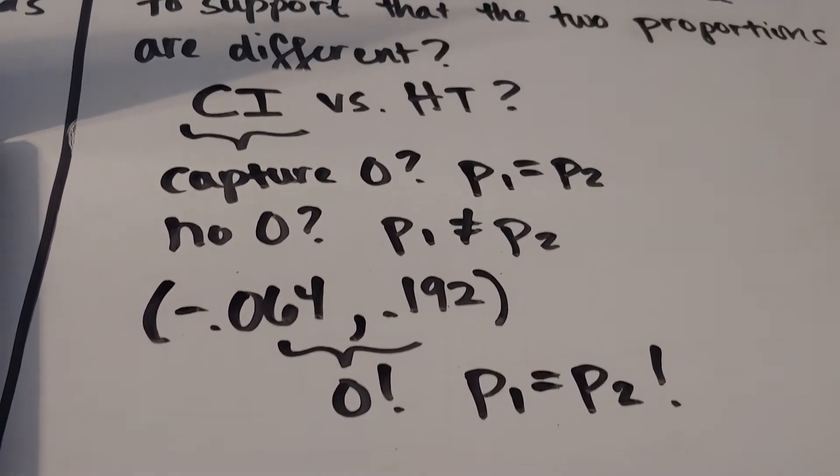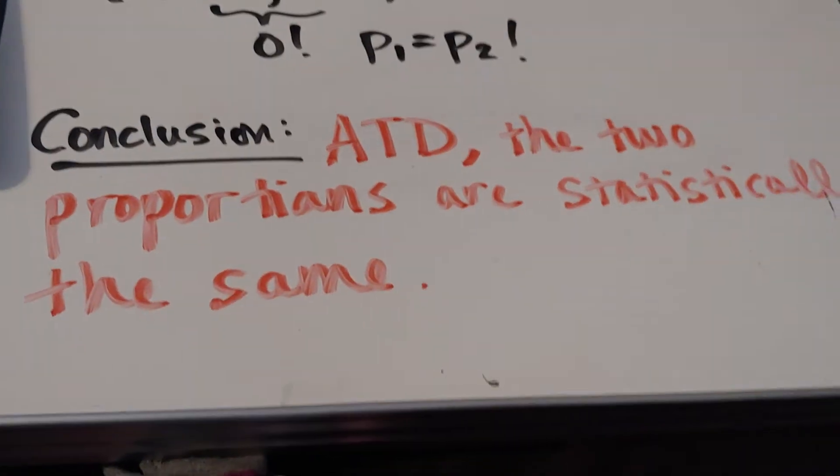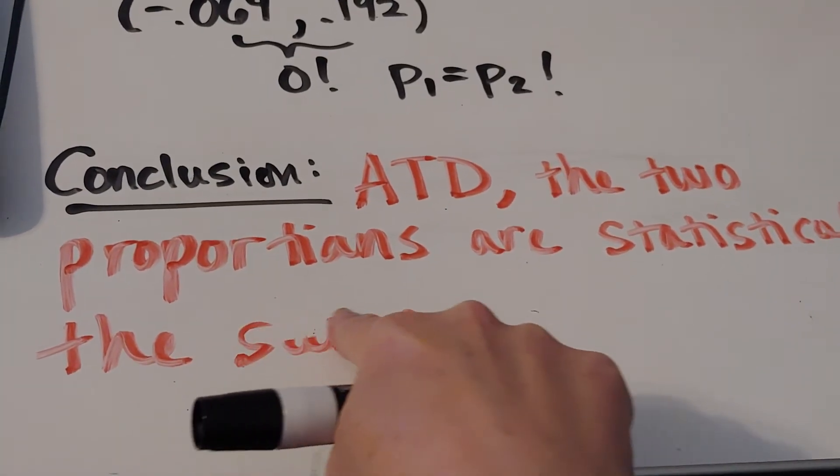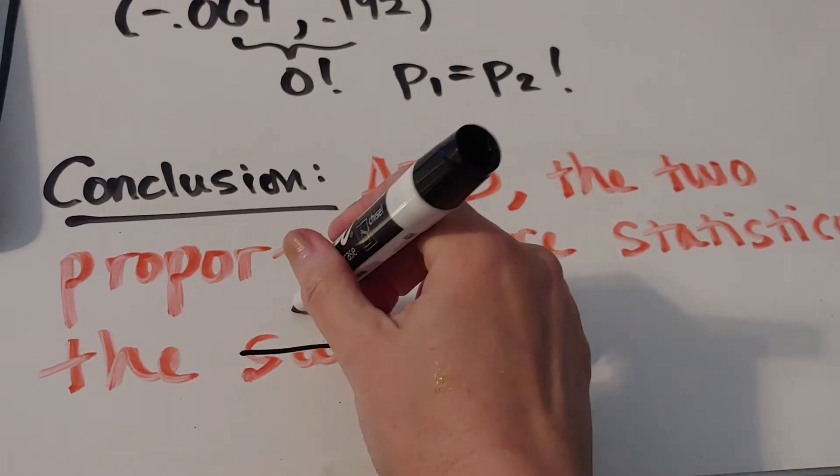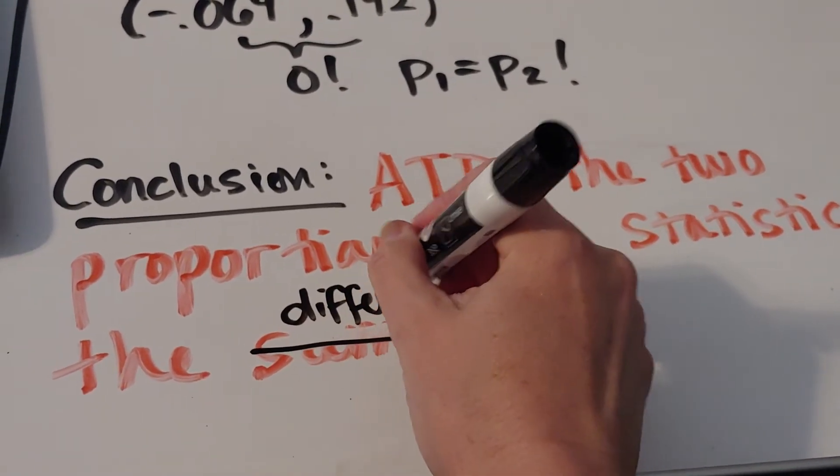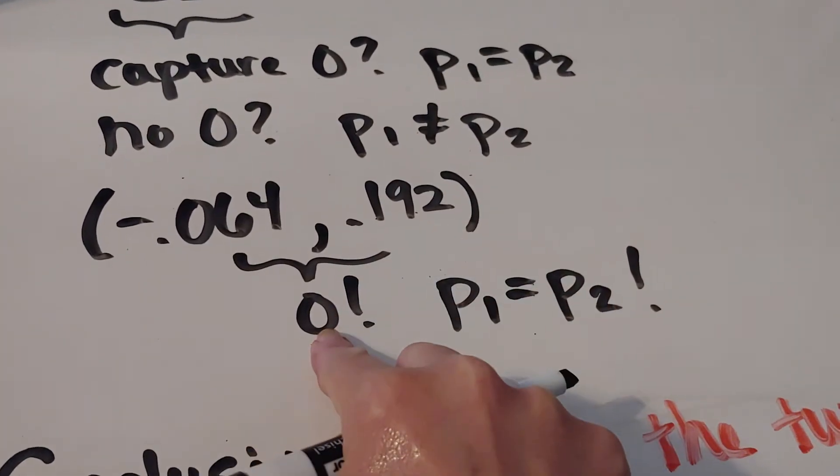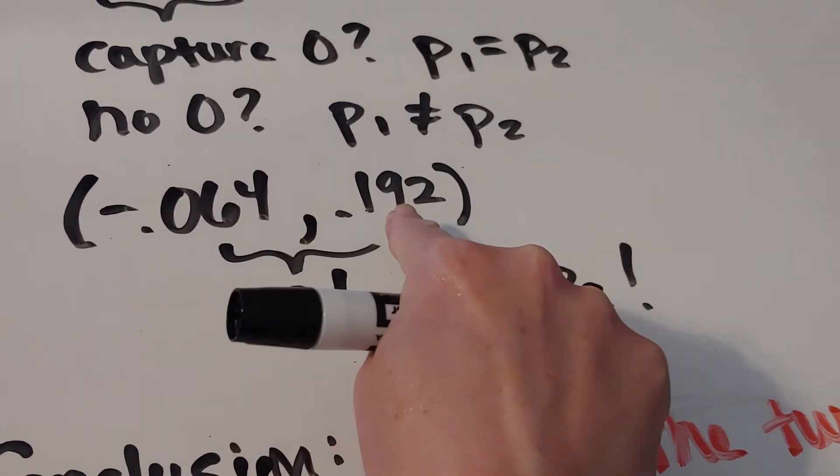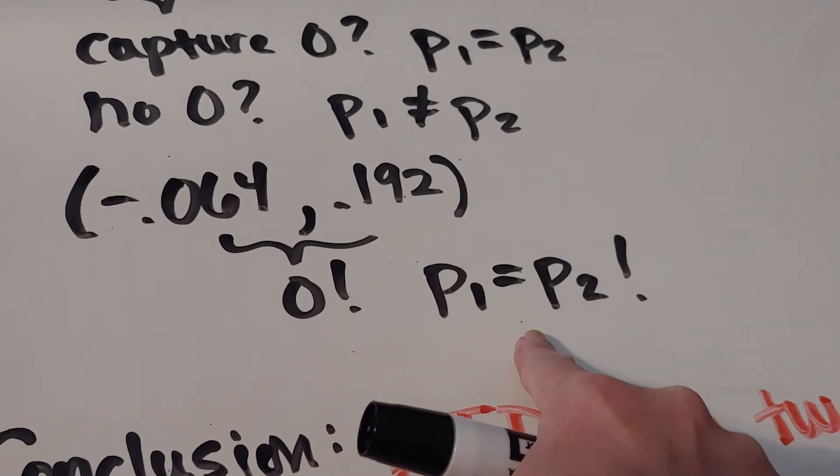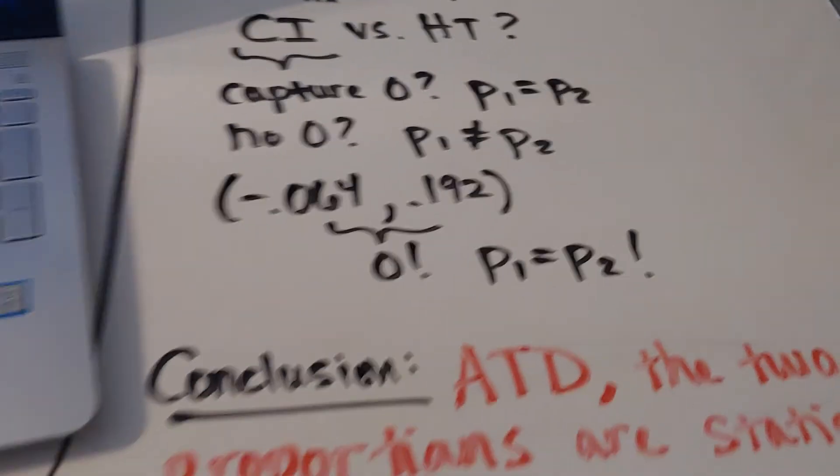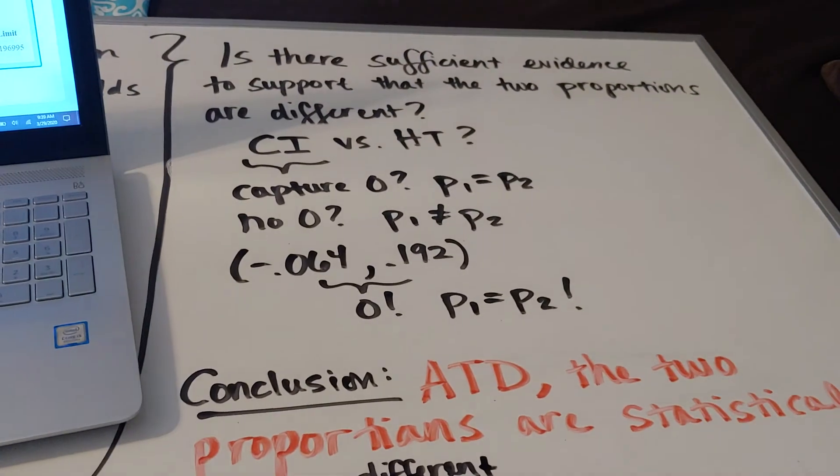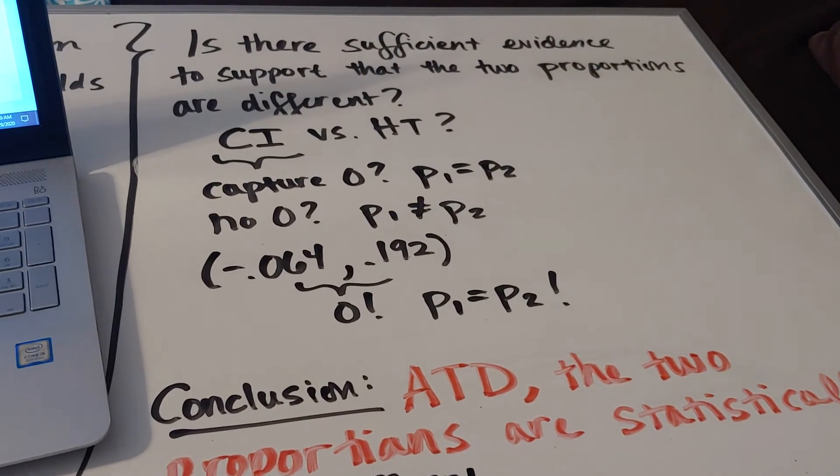If on the flip side, my hypothesis test showed that they were statistically different—pretend this says 'different'—when I come up here, I wouldn't capture zero. It'd go positive to positive or negative to negative to show that they were different. I hope this is helping as you're figuring out what to do when you're given two-sample proportions.